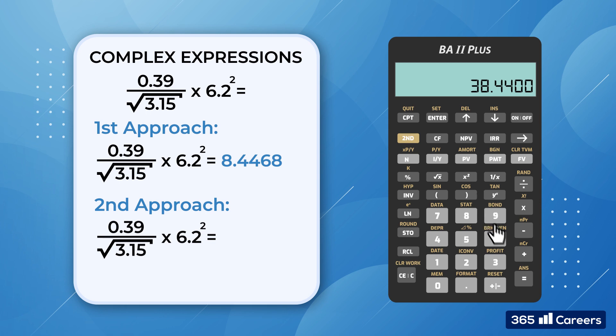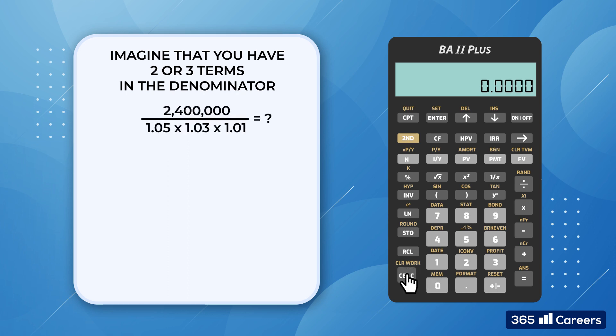You may wonder why this approach differs from the first one. Imagine that you have two or three terms in the denominator. Then it's easier to start from there and work your way up by multiplying with the denominator. Don't underestimate this approach. It could save you lots of precious time when you need it most.